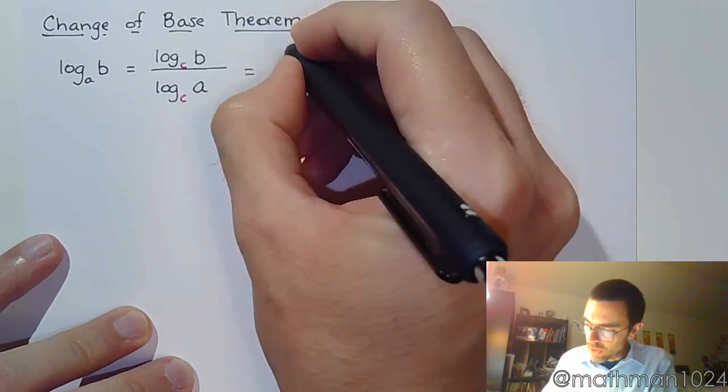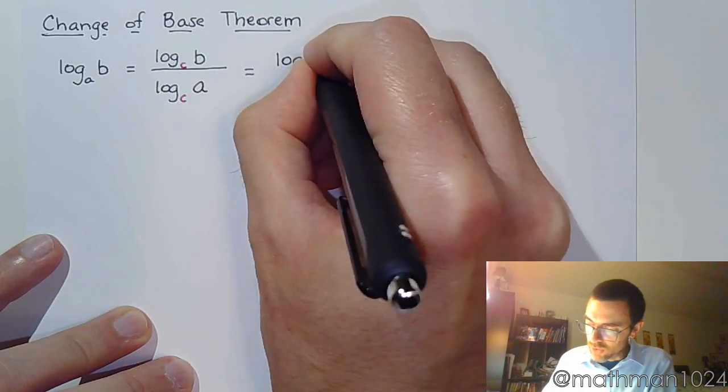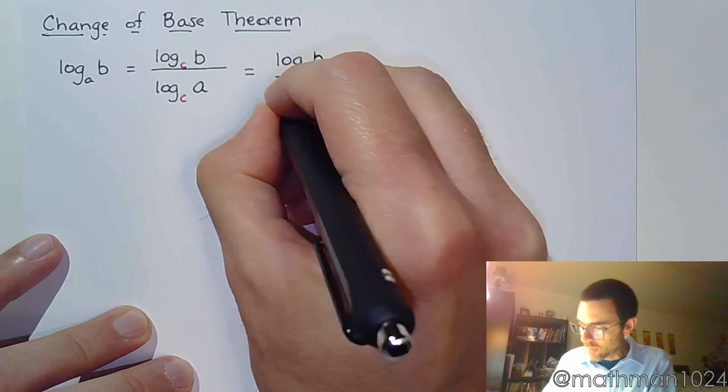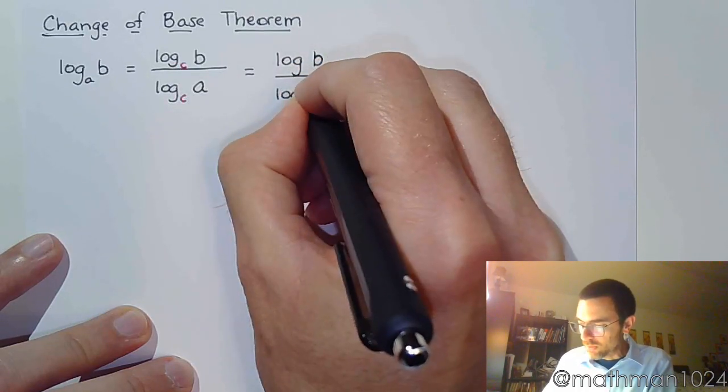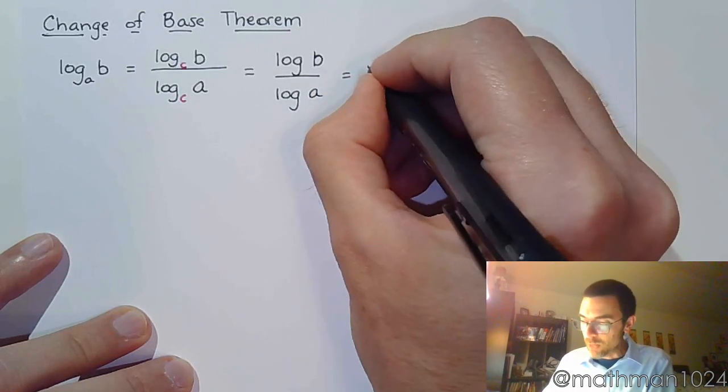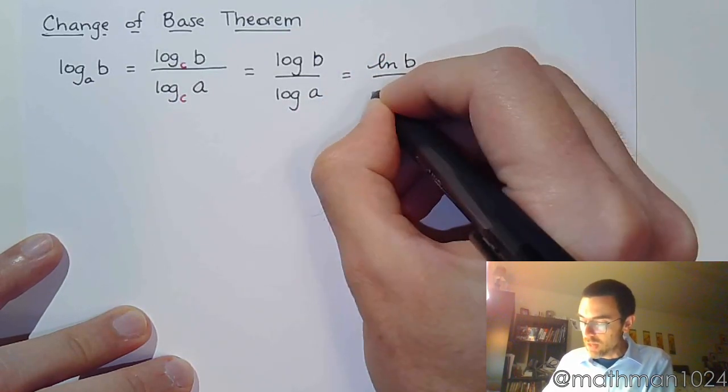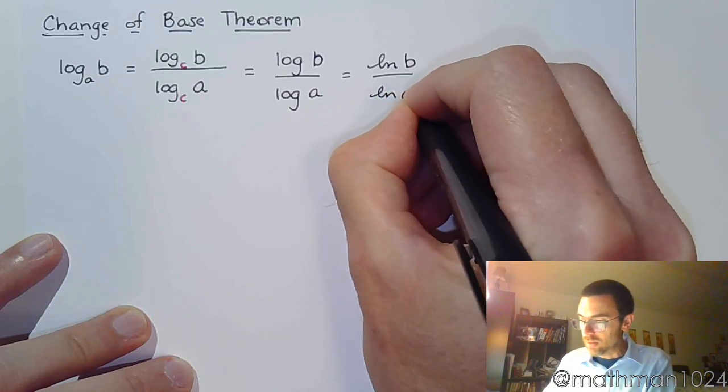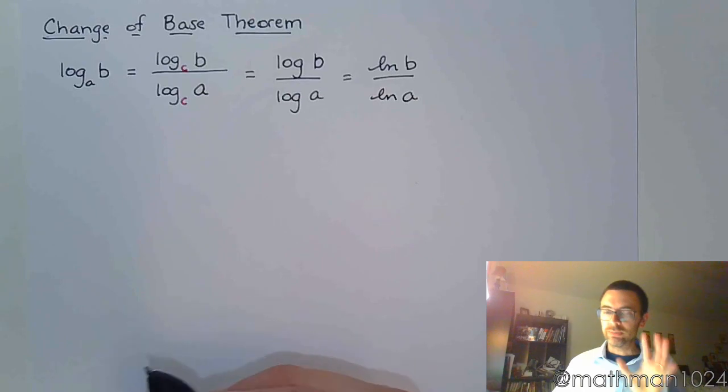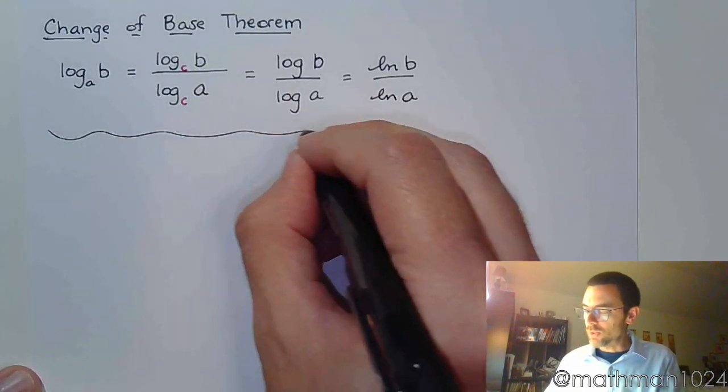Now typically, we can write it like this. We can use common logs and we can say log of B over log of A. That's the same thing as saying the natural log of B over the natural log of A. You may not think that it's cool, but let me show you how we get to use something like this.